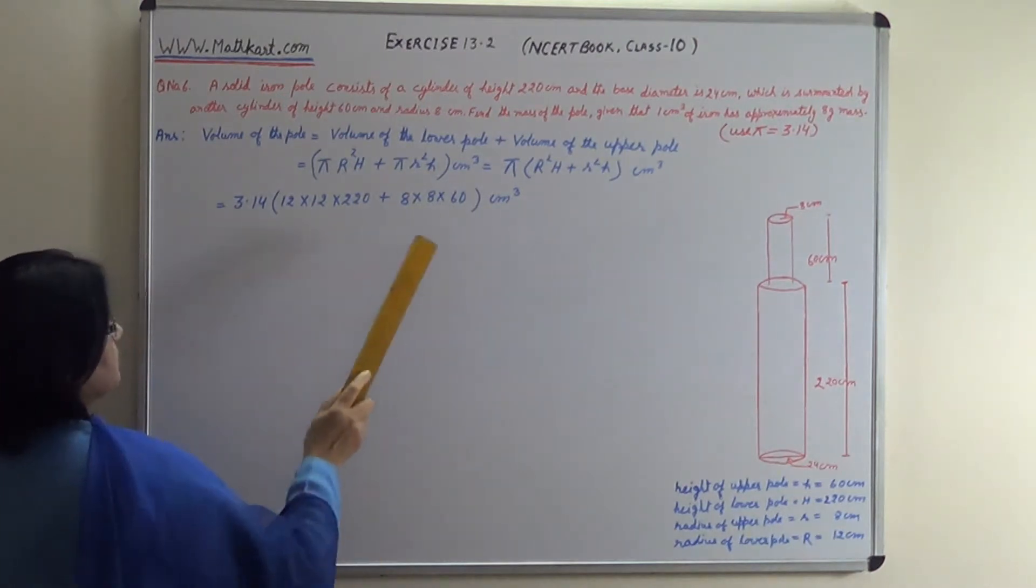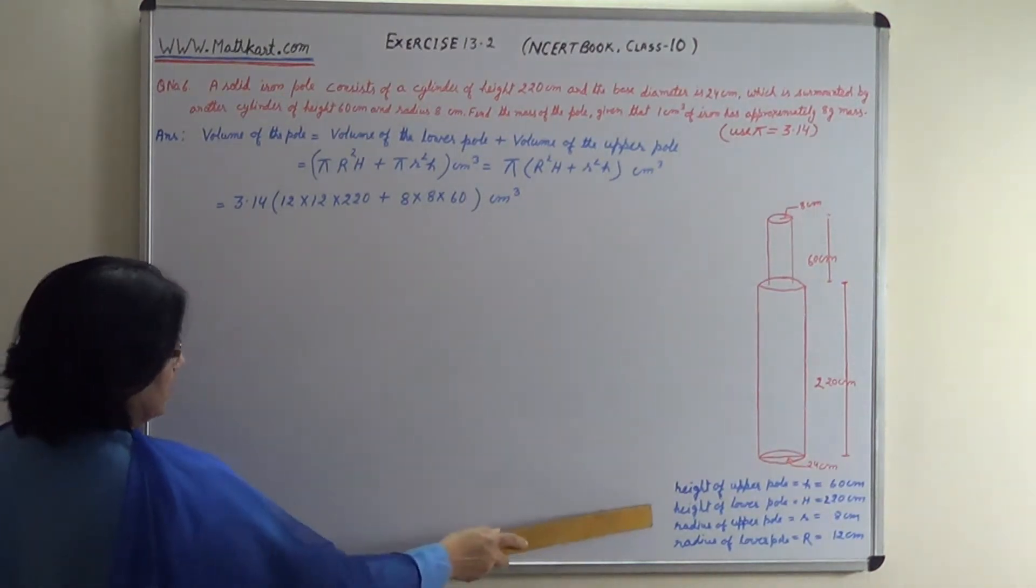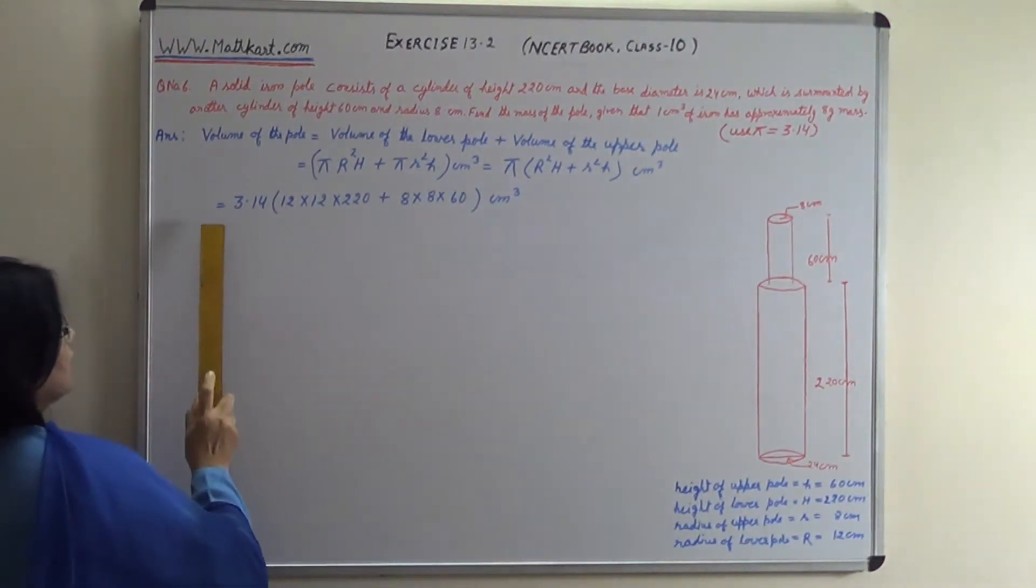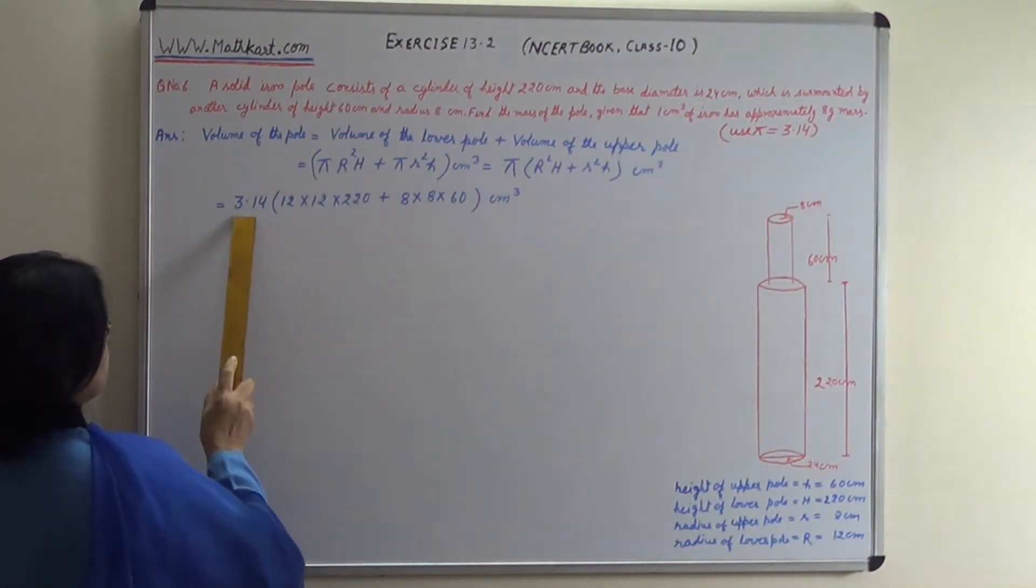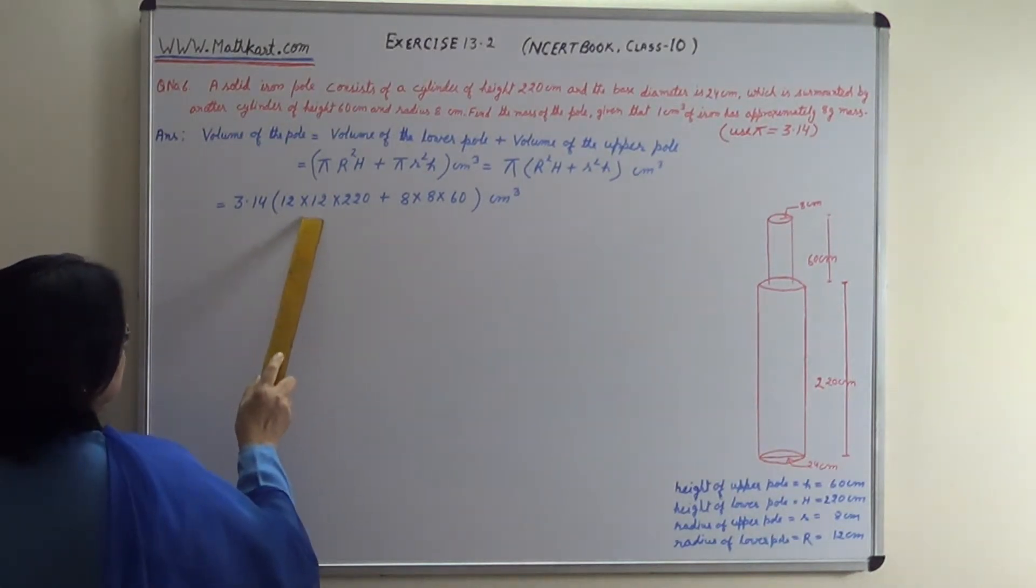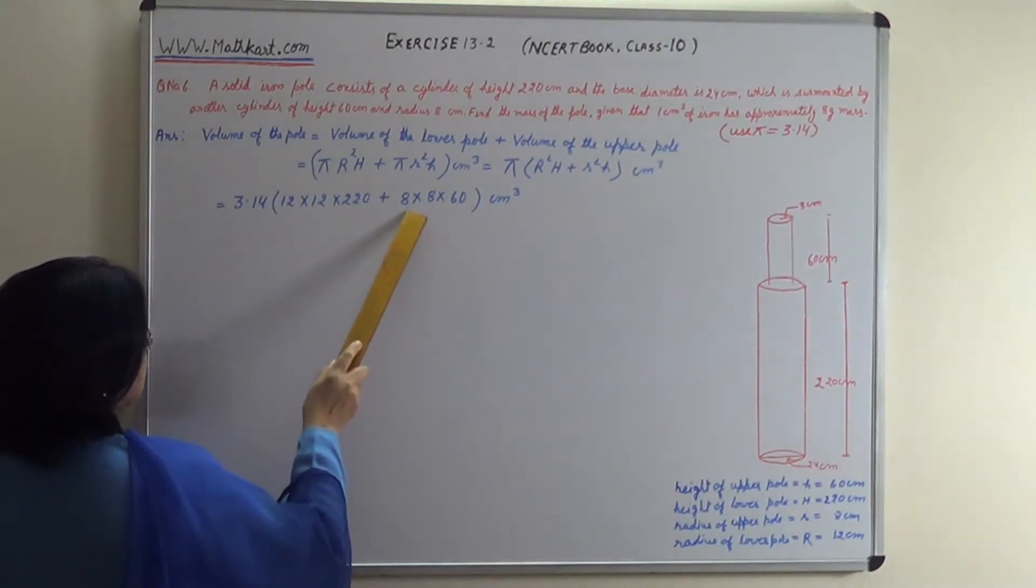When we substitute the measurements given, this becomes: pi value 3.14 times 12 times 12 times 220 plus 8 times 8 times 60 cubic cm.